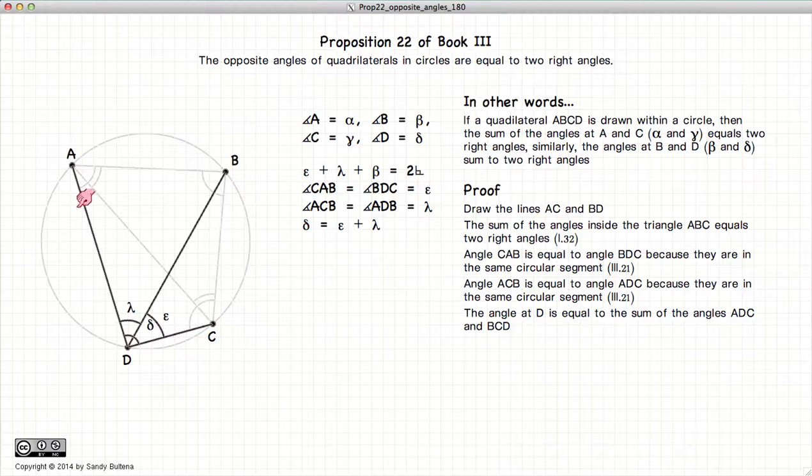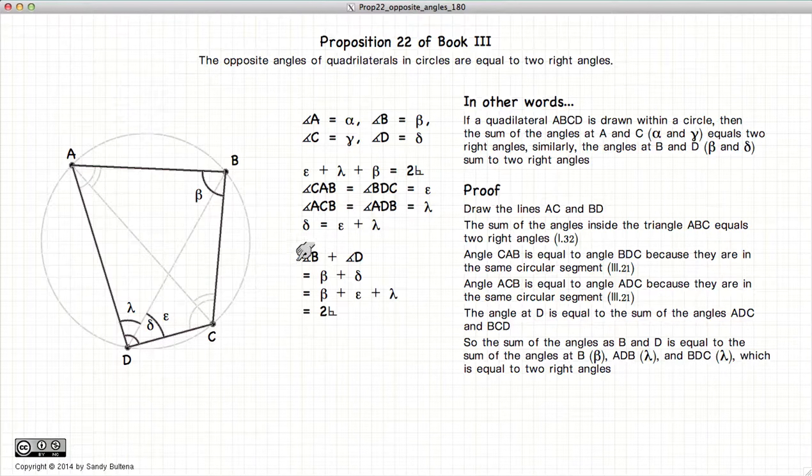If we look here, ADC is equal to lambda plus epsilon. So this angle delta is equal to lambda plus epsilon. So we have delta equals epsilon plus lambda. So now for summing beta plus delta, we have beta plus delta, but delta is equal to epsilon plus lambda. So B plus D is equal to beta plus epsilon plus lambda, which we've already shown here to be equal to two right angles. So here we have just demonstrated that B plus D is equal to two right angles.